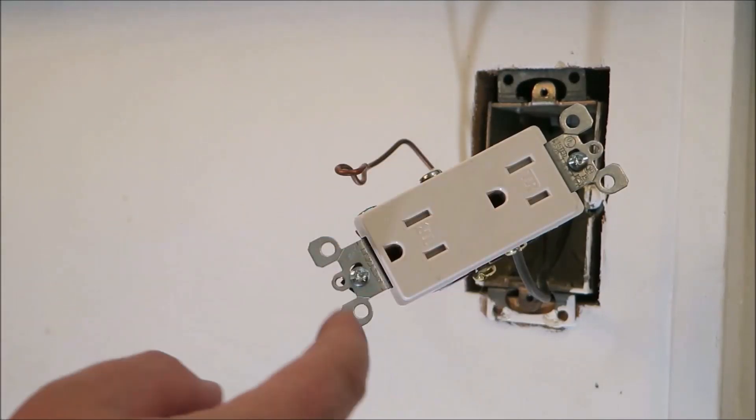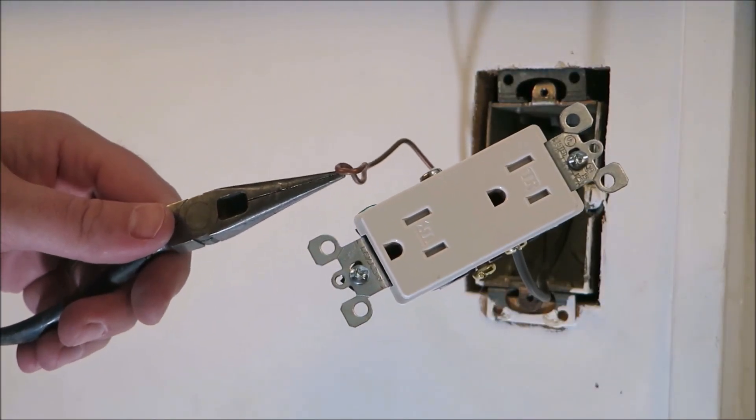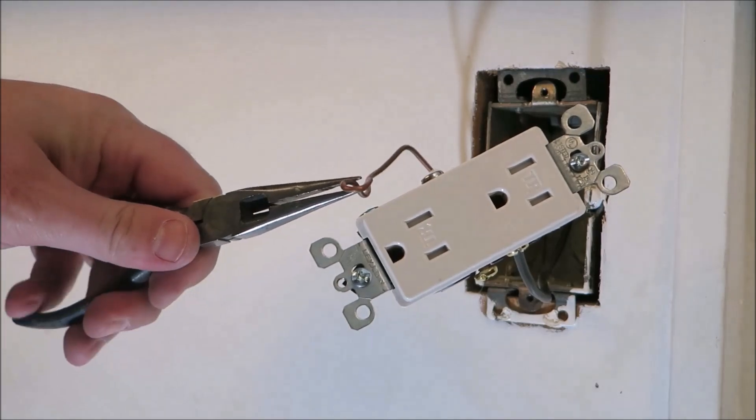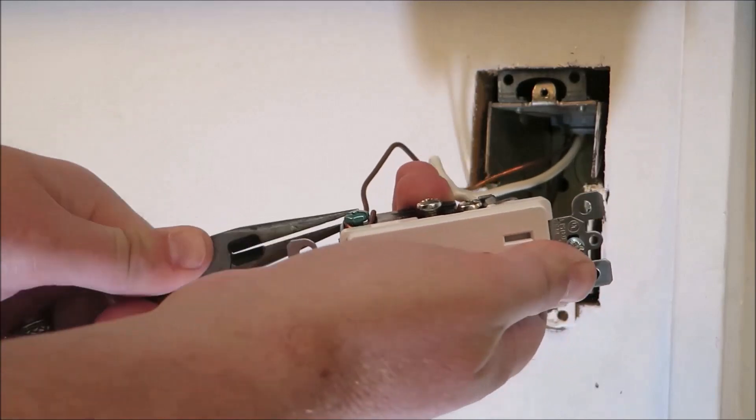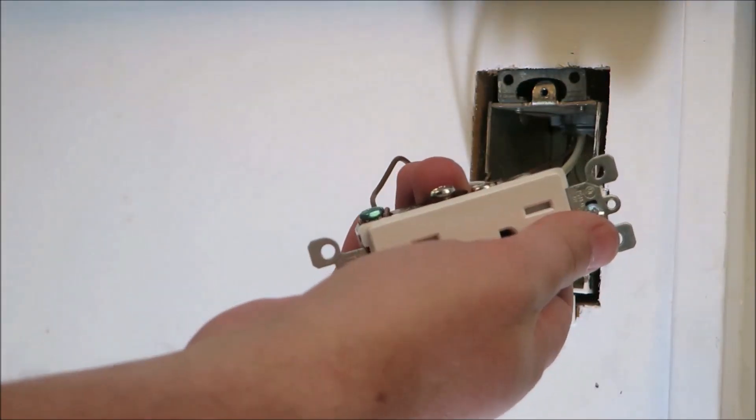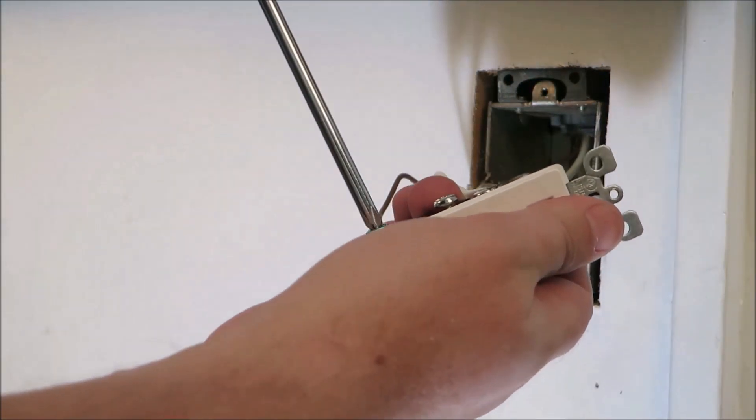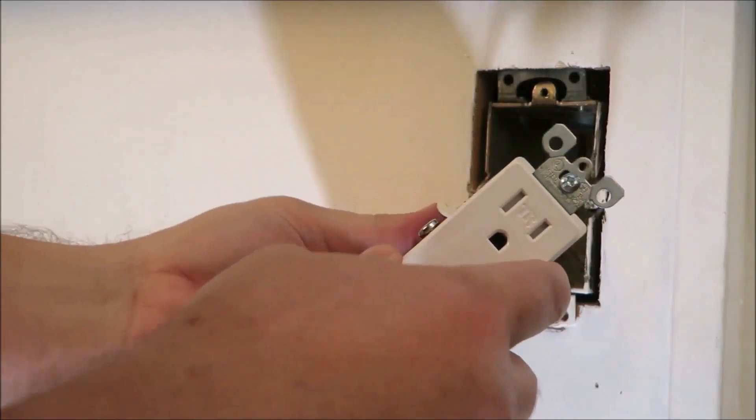So now that we have both wires attached, the final thing we need to do is add on to the ground. So we're going to take the wire and attach it to the green screw. And then we tighten it up.